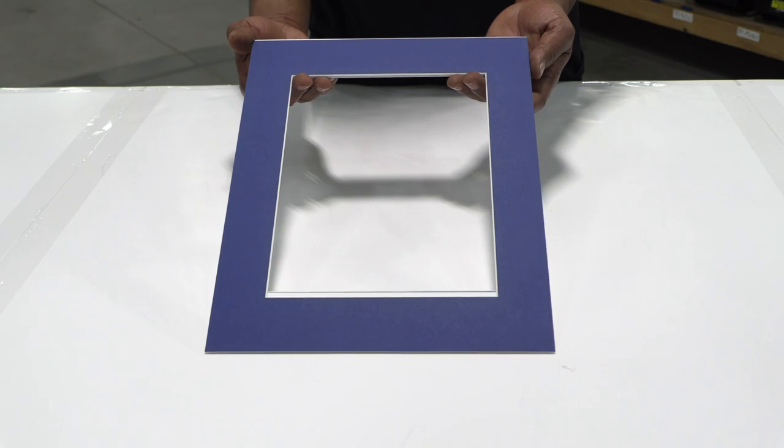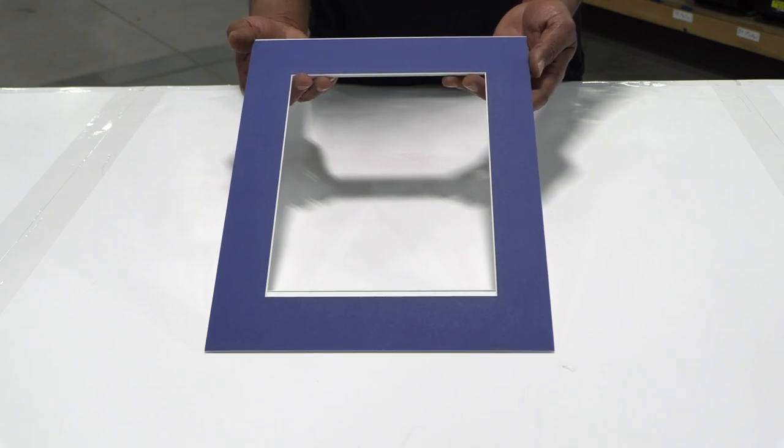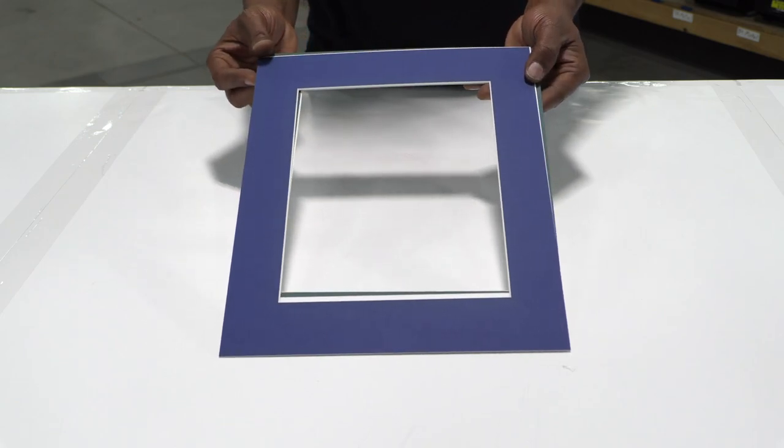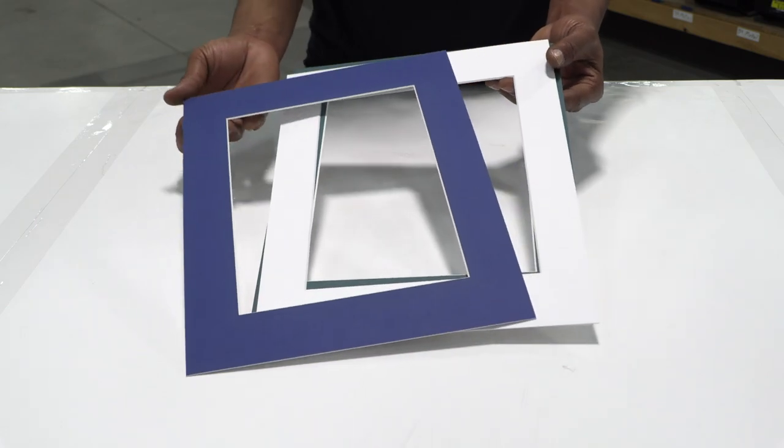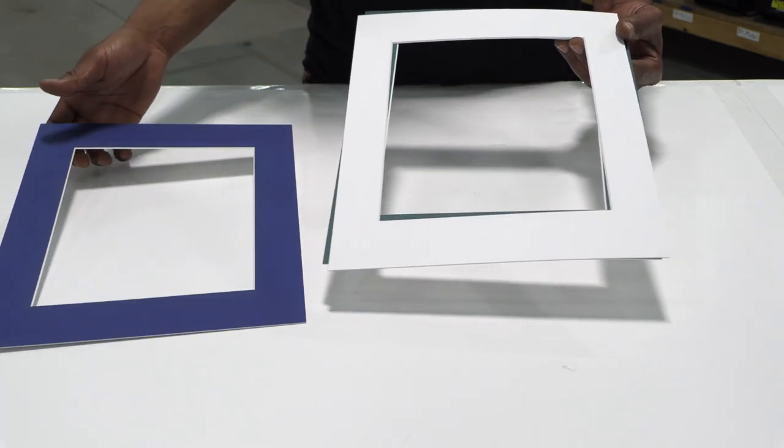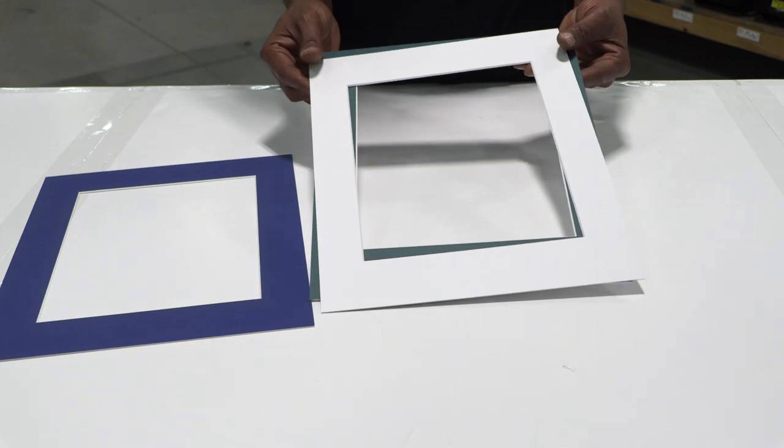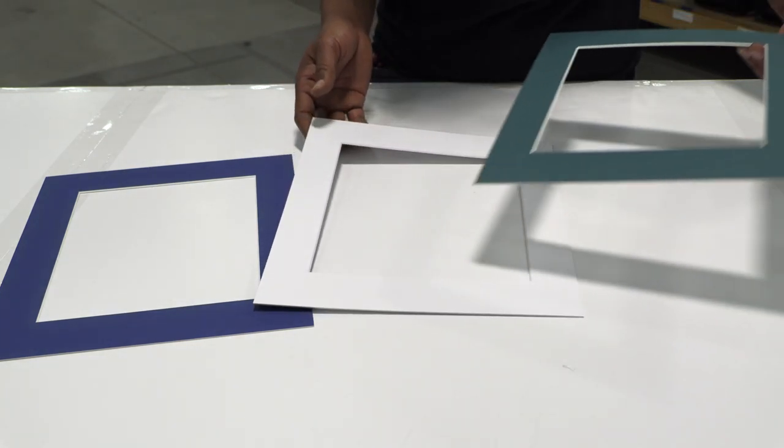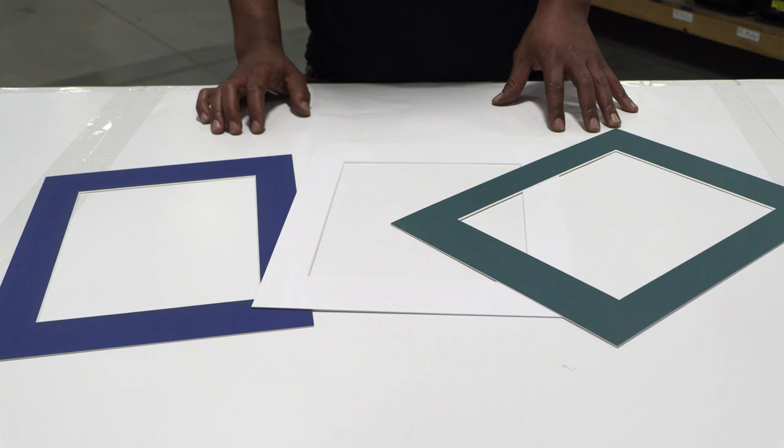Before you begin, you'll want to decide on whether or not to use a mat. A mat can provide multiple benefits. They can accent the colors within your artwork, even provide an extra border between your art and the frame. They can also help protect your art from being placed directly against the glazing and can be used to manage size if you don't have a frame customized specifically for your art.